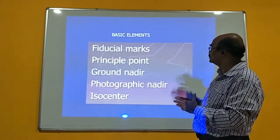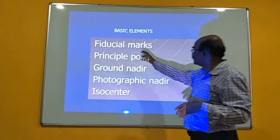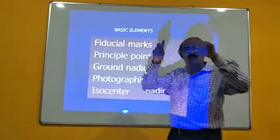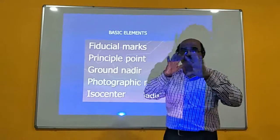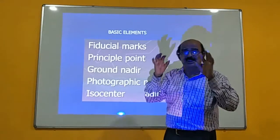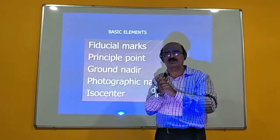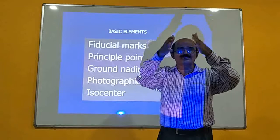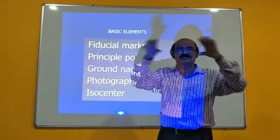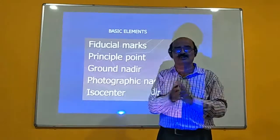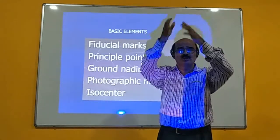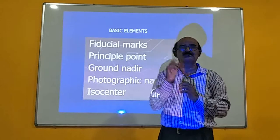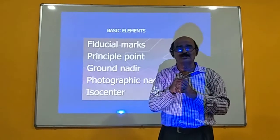The basic elements include fiducial marks — index marks represented at the four corners or center of the edges of the aerial photograph. By joining opposite fiducial marks, you get the principal point.